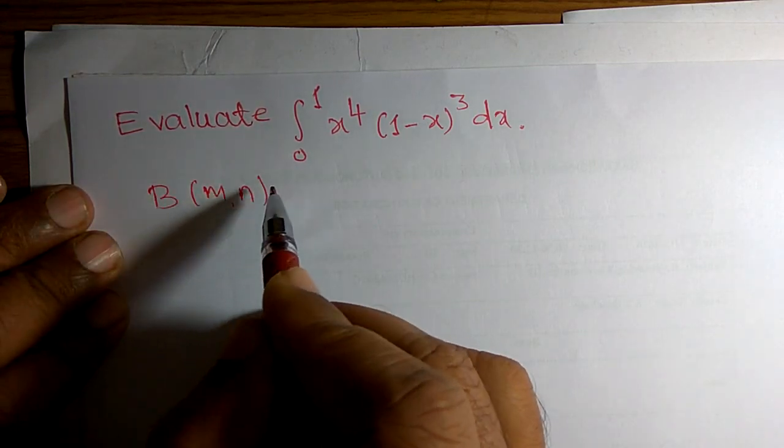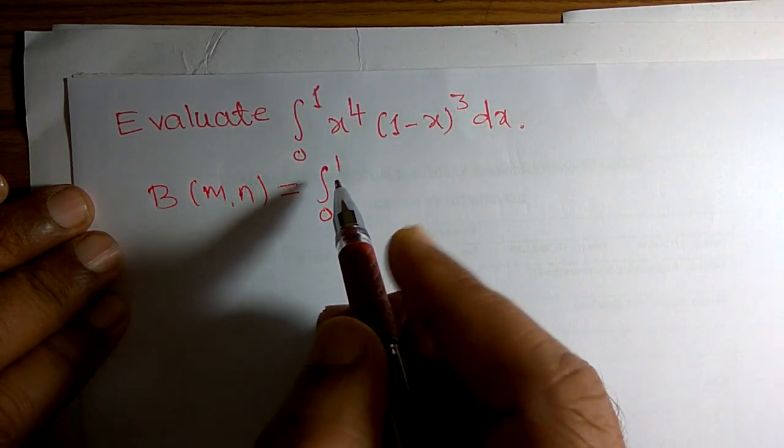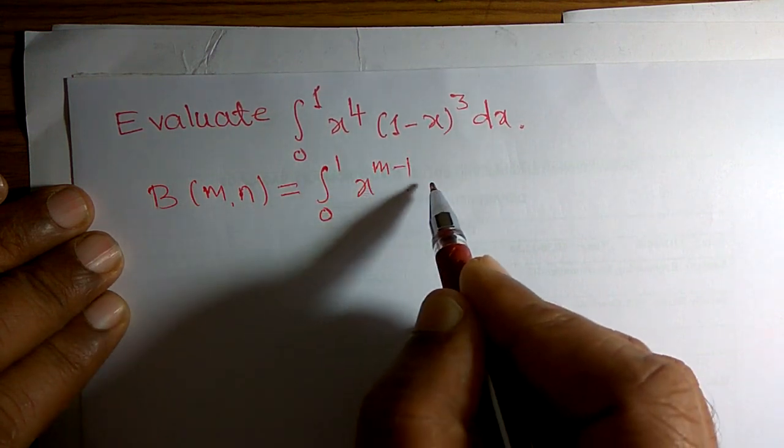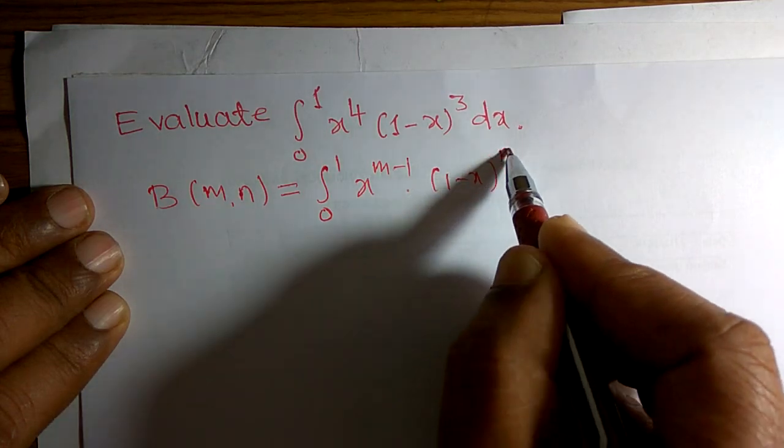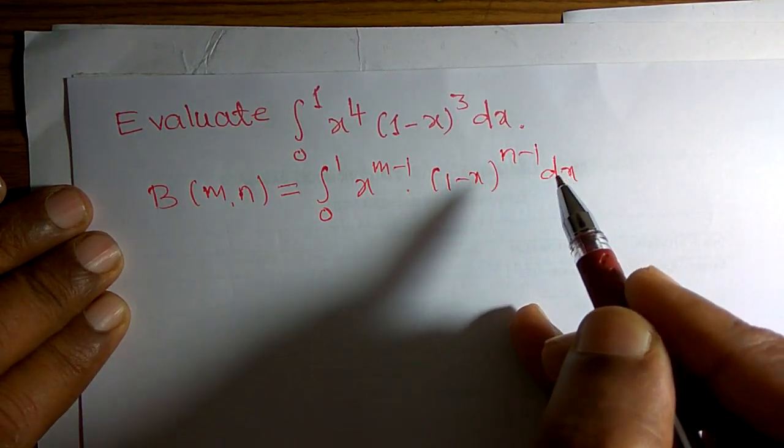beta of m and n can be written as integration 0 to 1, x to the power m minus 1 into 1 minus x raised to n minus 1 into dx.